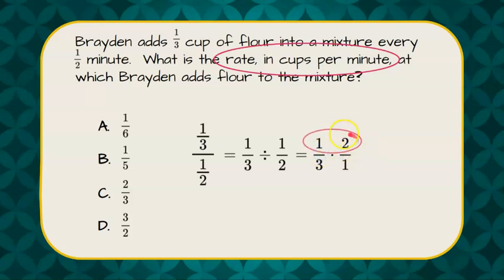So now we're going to multiply the numerators, and we're going to multiply the denominators, giving us two-thirds.